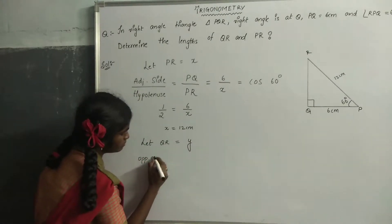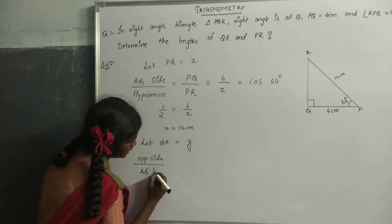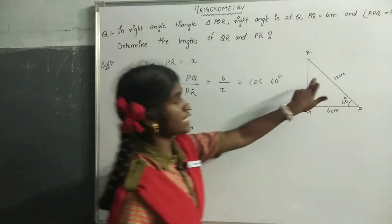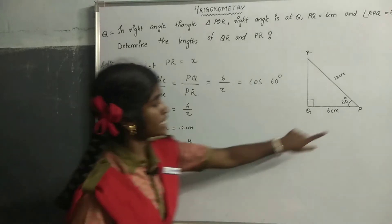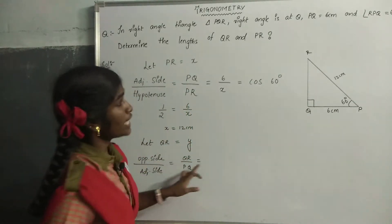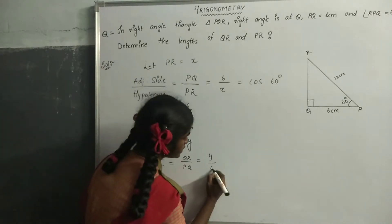Opposite side by adjacent side - opposite side to 60 degrees is QR, adjacent side is PQ. So QR by PQ equals Y by 6.